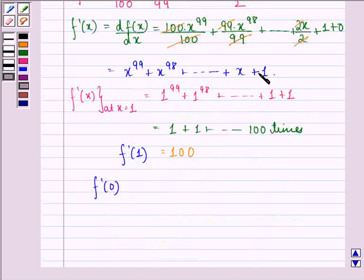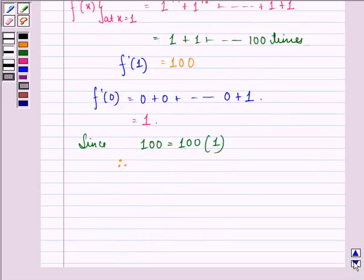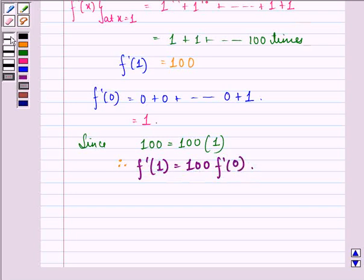Now we find f'(0): we put x = 0, giving 0 + 0 + ... + 0 + 1, which equals 1. Since f'(1) = 100 = 100 × 1 = 100 times f'(0), we have proved that f'(1) = 100·f'(0). I hope you understood the question and enjoyed the session. Have a good day.